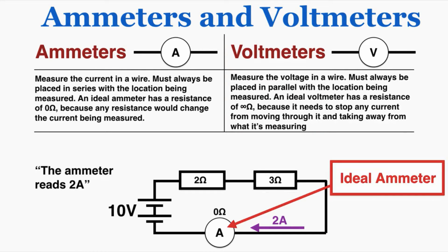We call an ammeter with 0 ohms an ideal ammeter. We put it into the circuit without it affecting our measurements at all. Because it perfectly measures the circuit without affecting the results, it is an ideal ammeter — 0 ohms of resistance means an ideal ammeter.